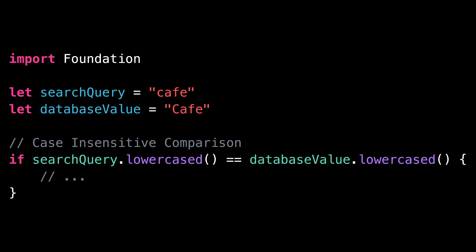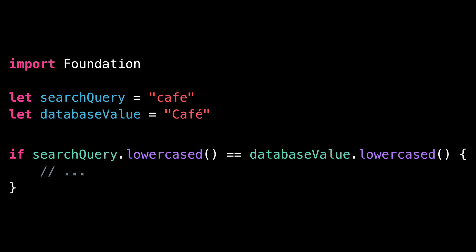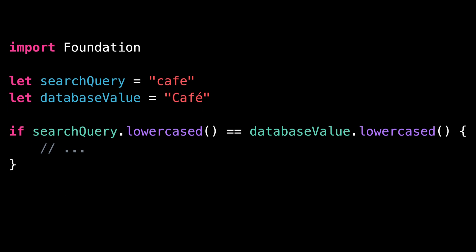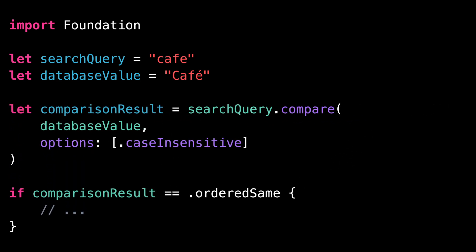You probably also want to ignore all diacritics like accents. Fortunately, the type string comes with a built-in method that's perfect for this job. This method is called compare, and it allows you to specify options for the comparison. Among the supported options, we can specify both case insensitive and diacritic insensitive.